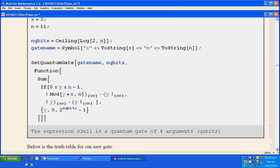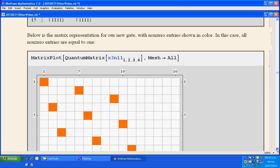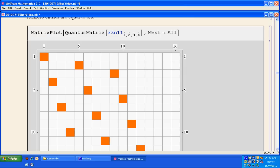With these commands, the gate is going to be called x3n11. It's created with these commands. Here we have the truth table of the gate that was created. Here we have a matrix representation where orange squares represent non-zero terms in the matrix of the operator. It's an operator of four qubits.